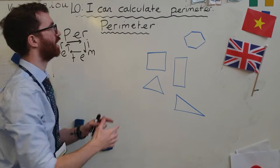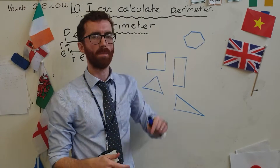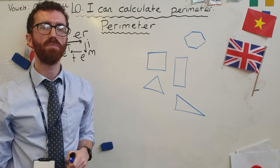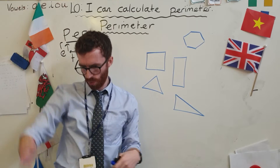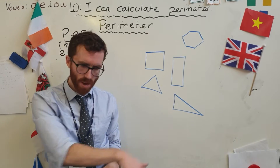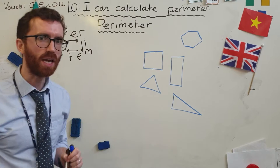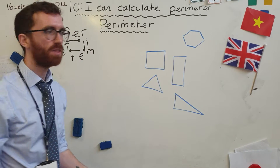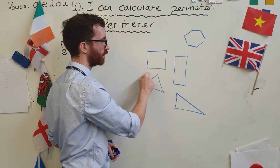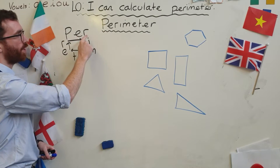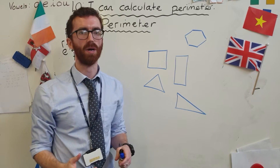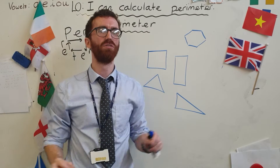Our lesson here: I can calculate perimeter. Perimeter — why am I saying it like that? Well, perimeter is the length around the outside of a shape, so it's this plus this plus this plus this. Perimeter — that is the way that you're going to remember it. It is the distance around the outside of a shape.